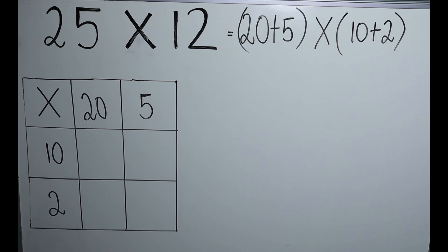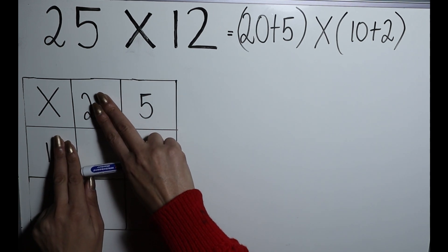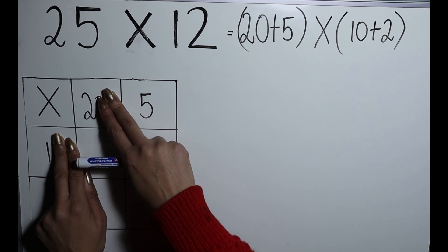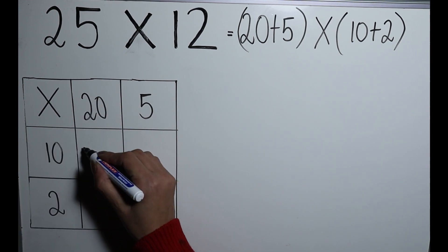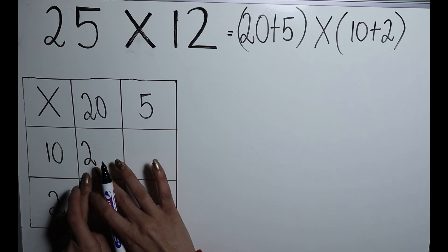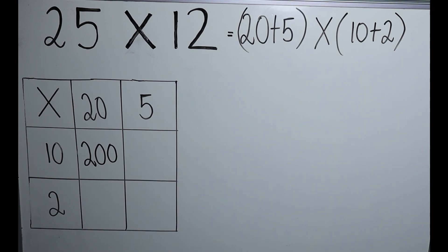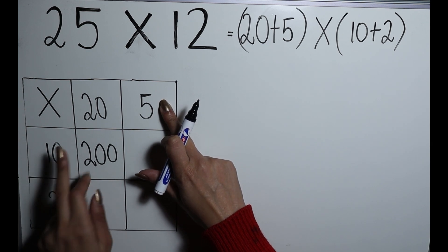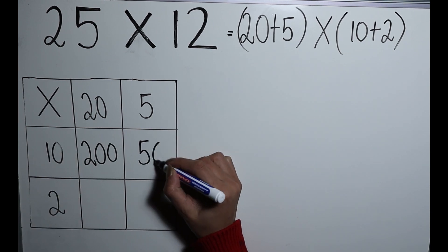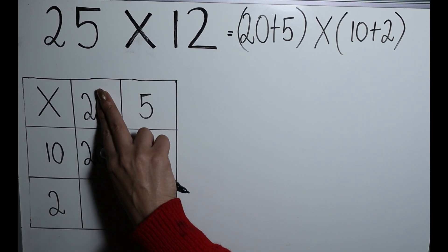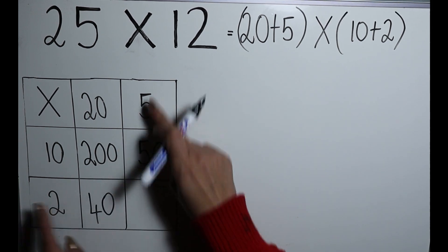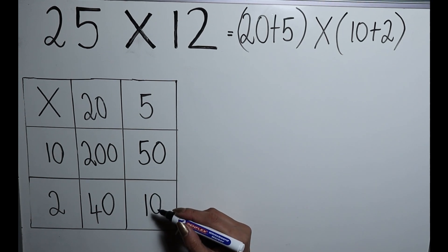What makes this very easy is you close your zeros. So for twenty times ten, I close the zeros and just look at two times one — anything times one stays the same, so my answer is two. Then I count how many zeros I closed — one from twenty and one from ten — so I enlarge two with two zeros to get two hundred. I do the same for each cell: ten times five gives fifty, twenty times two gives forty, and two times five gives ten.